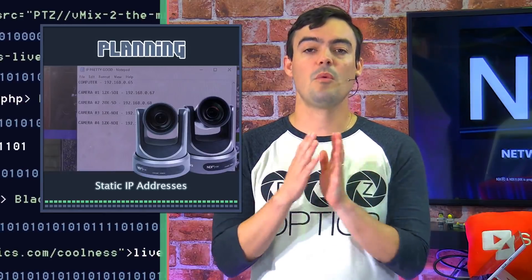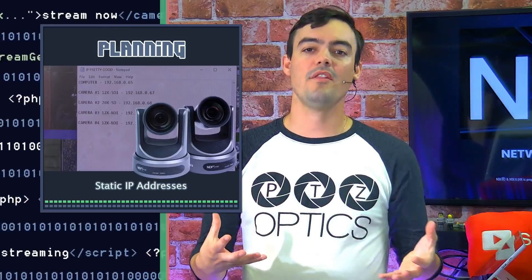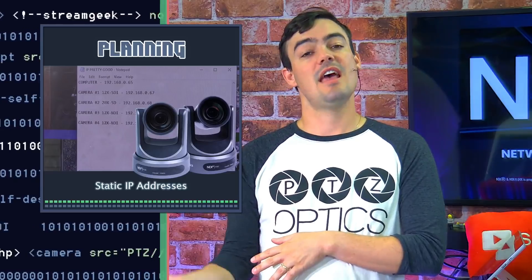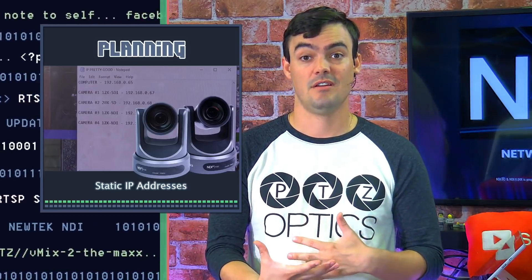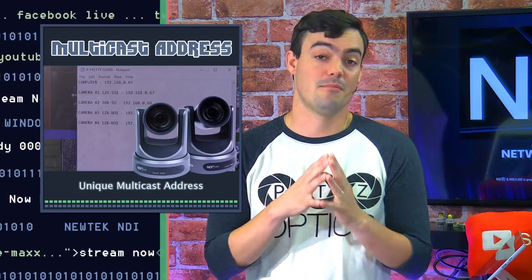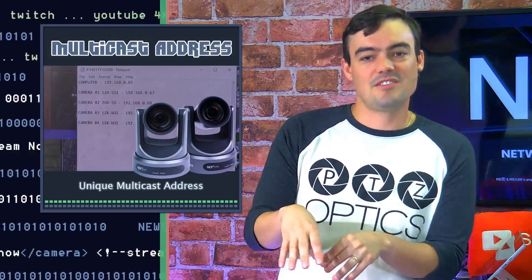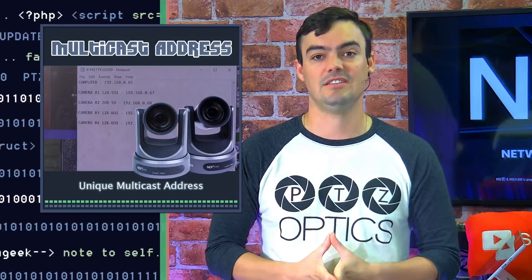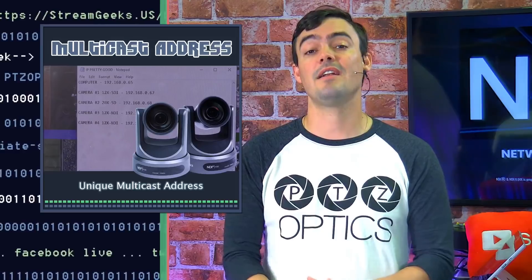Today we're talking about planning — we're going to plan out the requirements for your network and talk about setting up a static IP address and something you might not have heard of: a multicast address. We are going to strictly follow the NewTek guidelines that have been released for selecting a network switch, and hopefully this will help you find the ideal network switch for your video production.